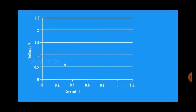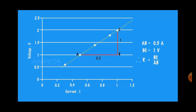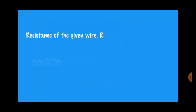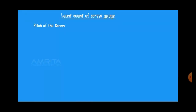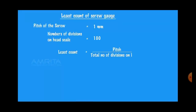Using the observation table, you can plot the graph — on the y-axis we have taken voltage and on the x-axis we have taken the current. Using this graph you can find the resistance. So the resistance of the wire is 2 ohms. With the length of the wire being 30 centimeters, the resistance per centimeter can then be calculated.